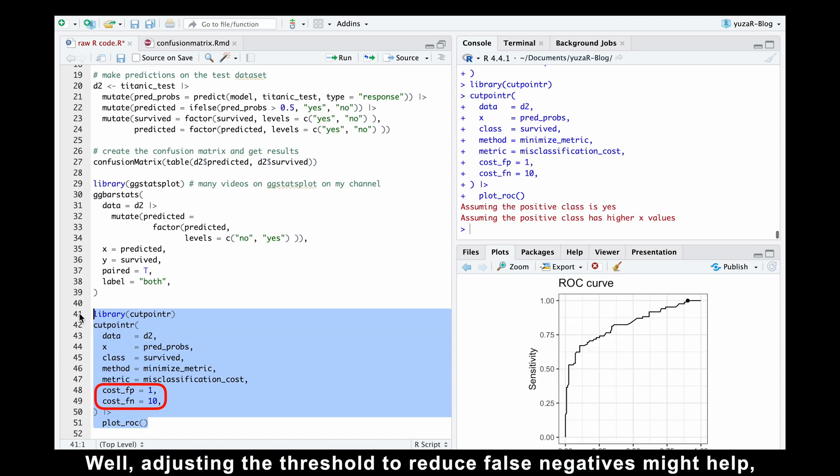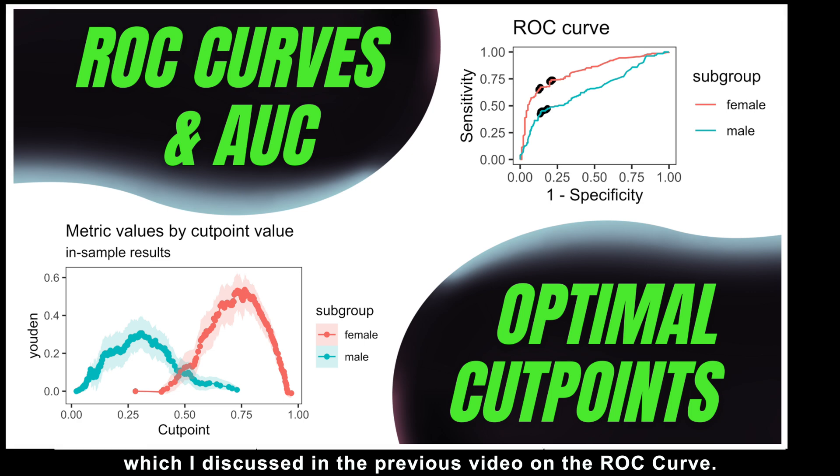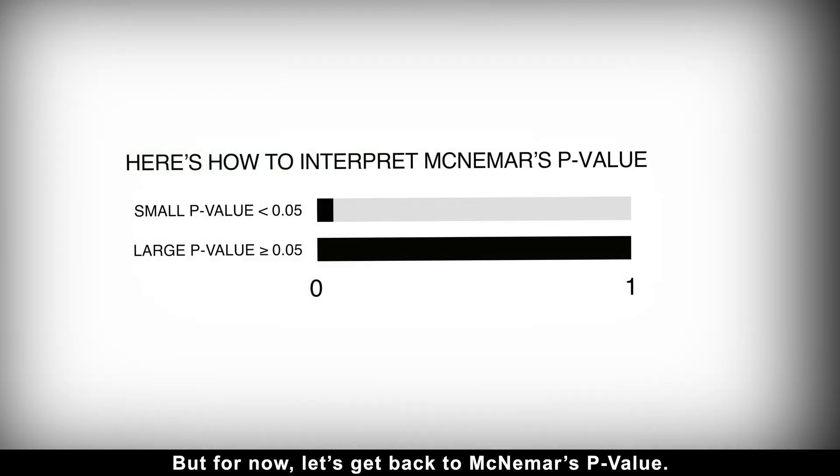But what can we do about it to improve our model's performance? Well, adjusting the threshold to reduce false negatives might help, which I discussed in a previous video on the ROC curve. But for now, let's get back to McNemar's p-value.